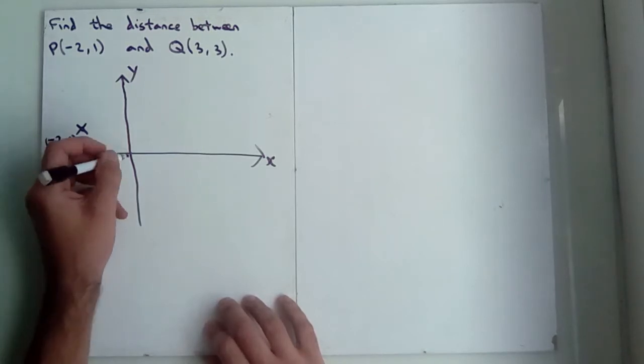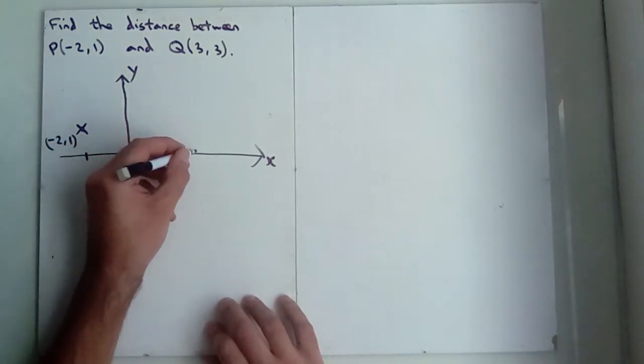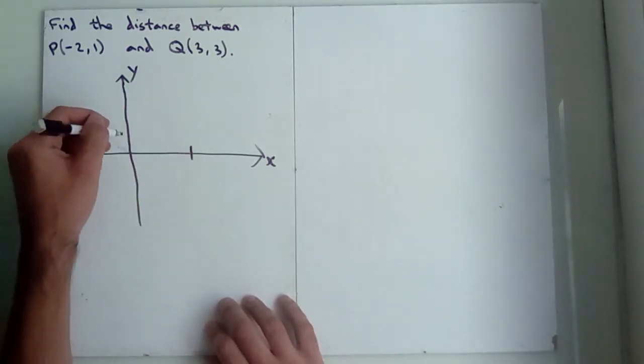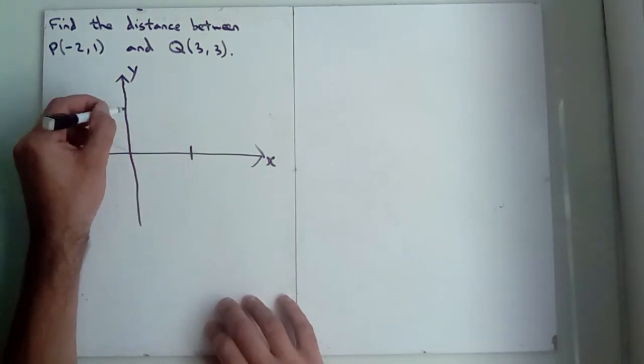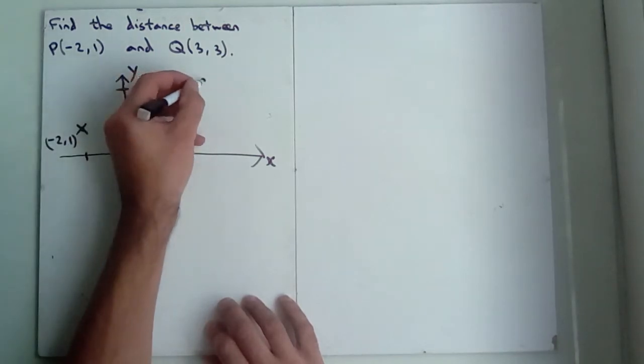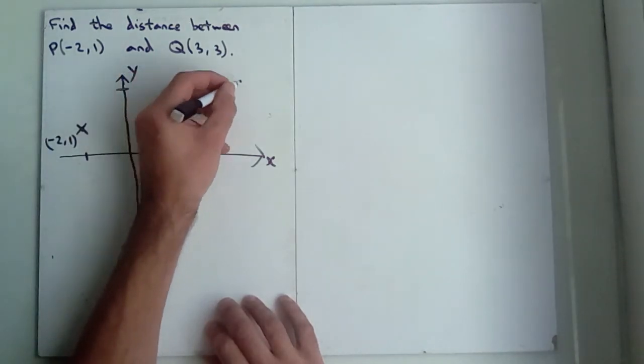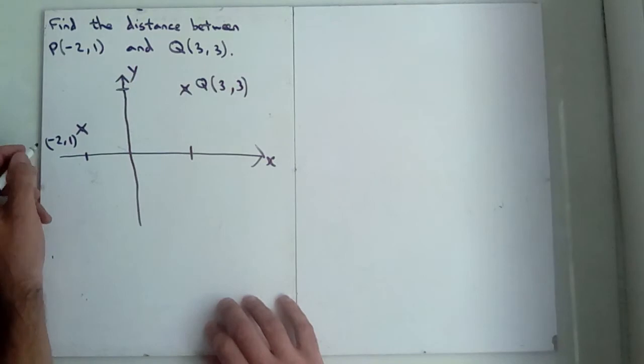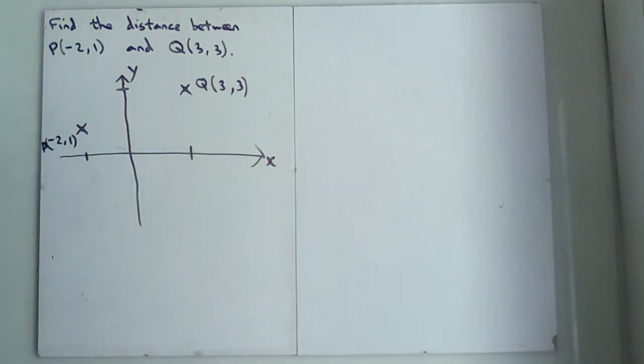And 3, 3 is going to be 1, 2, 3 along, like that, and 1, 2, 3 up, so it's going to be somewhere around there. That is Q at 3, 3, and this was P at minus 2, 1, just like that.